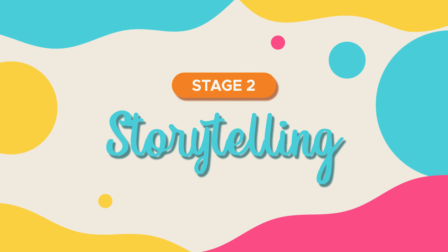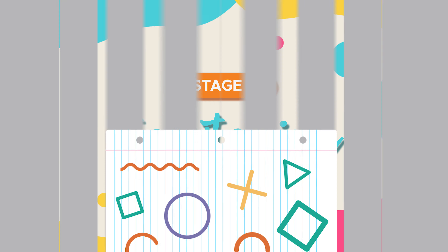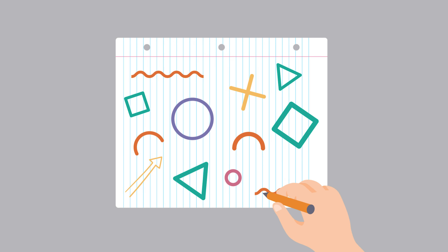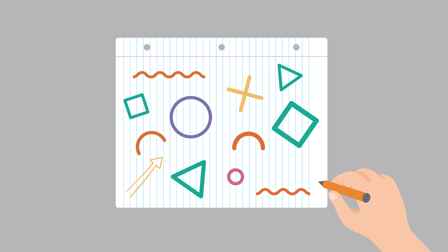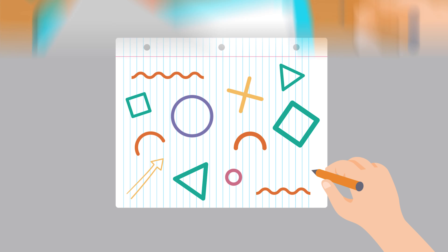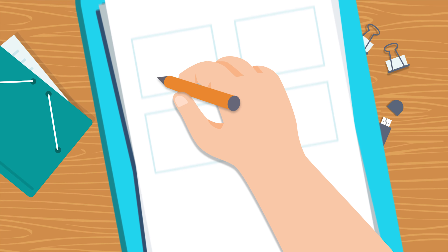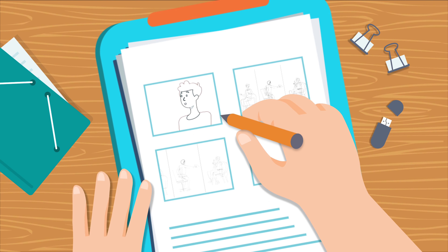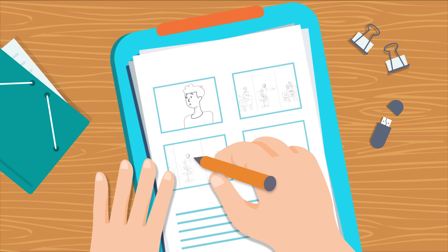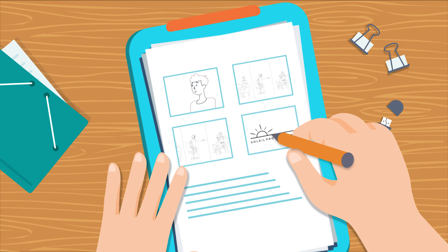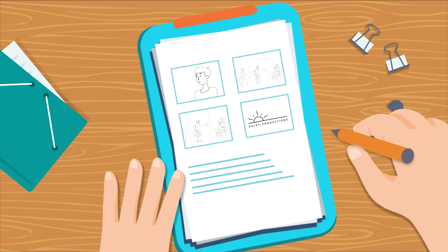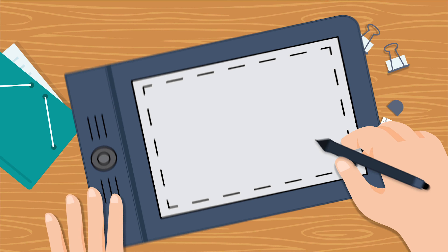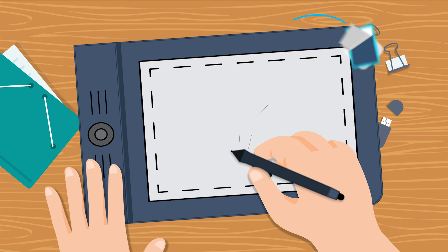Stage two: storytelling. In this stage, we will focus on how to convey the message in a visual manner. How do we do this? We first create a storyboard — that's a visual representation of the main actions that take place in the video, just like a comic book.